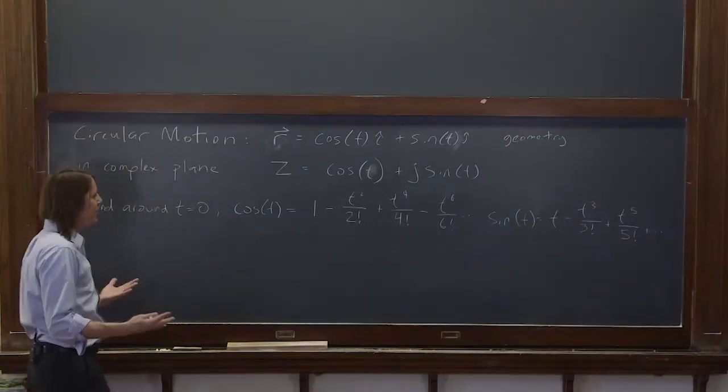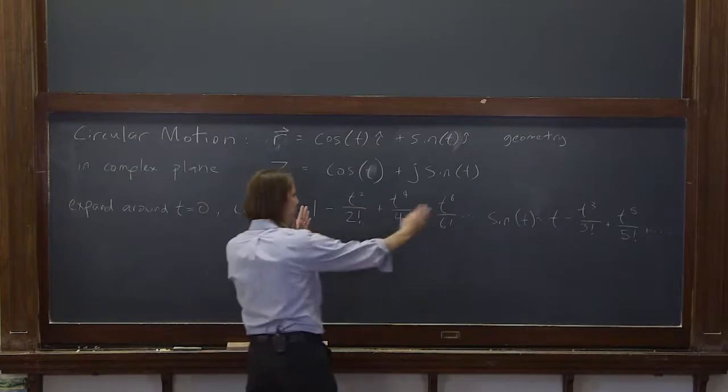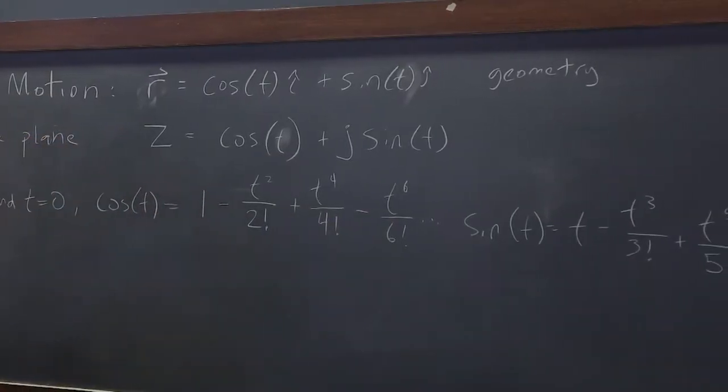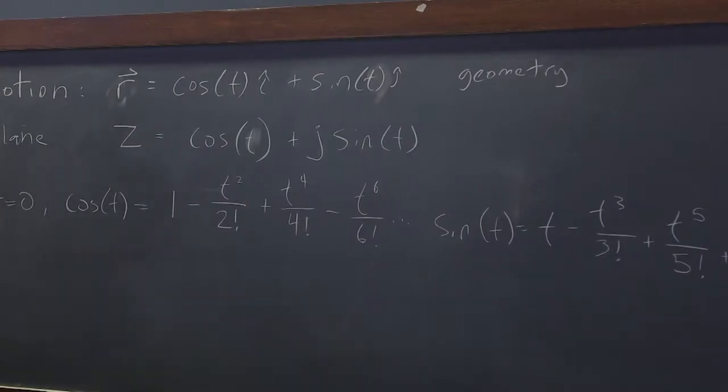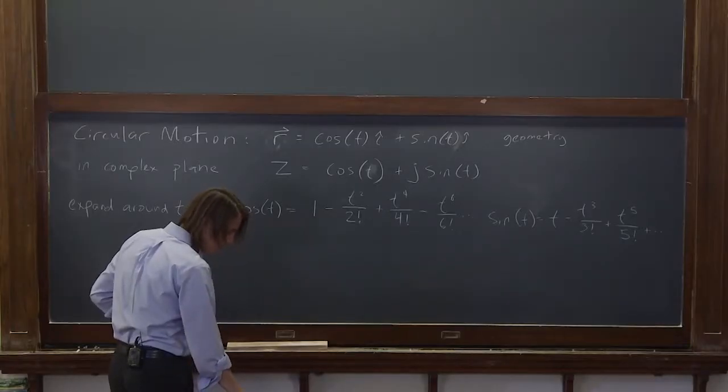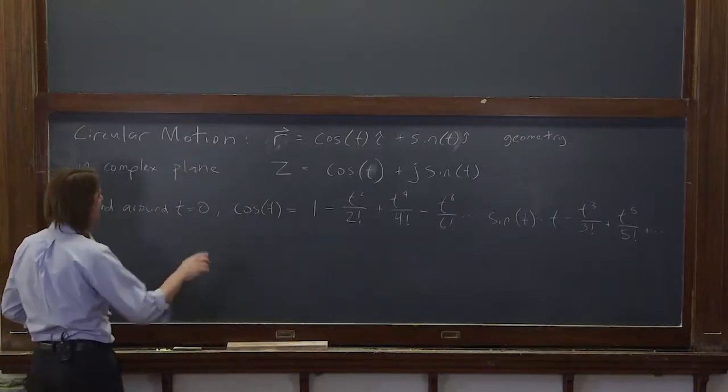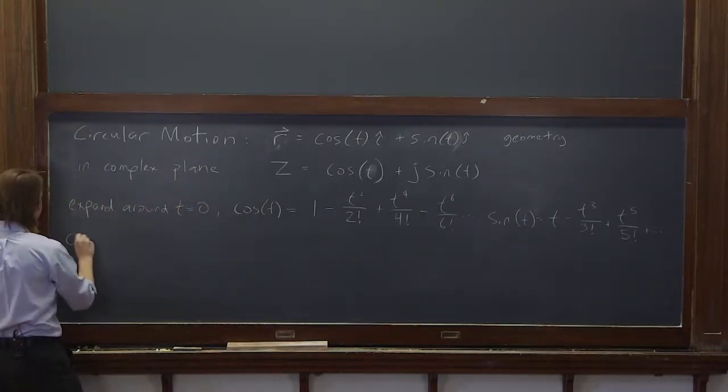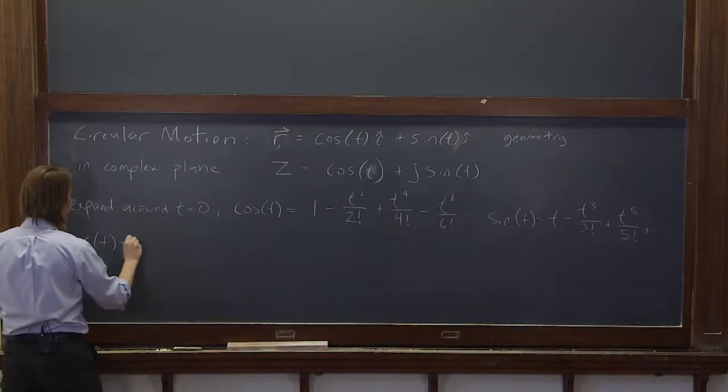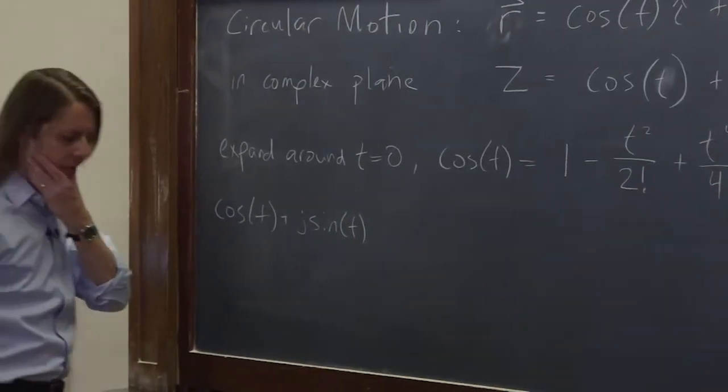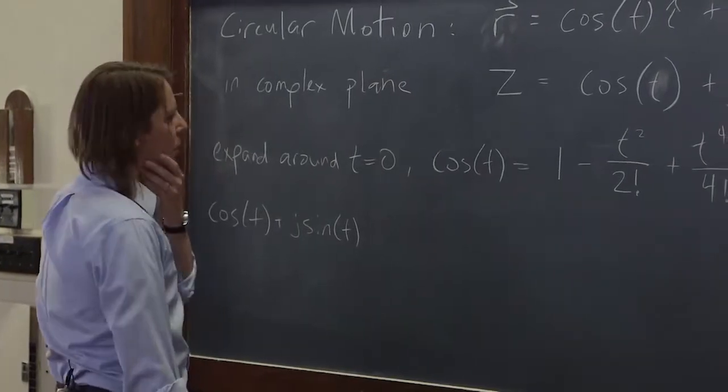And these are real. If you've never done this, plot these yourself and just add more and more terms, and you'll see it makes more and more of a sinusoid. It's pretty exciting, actually, to me. Let's see. So let's start putting together the expansion then for cosine of t plus j sine of t. So what would it look like?